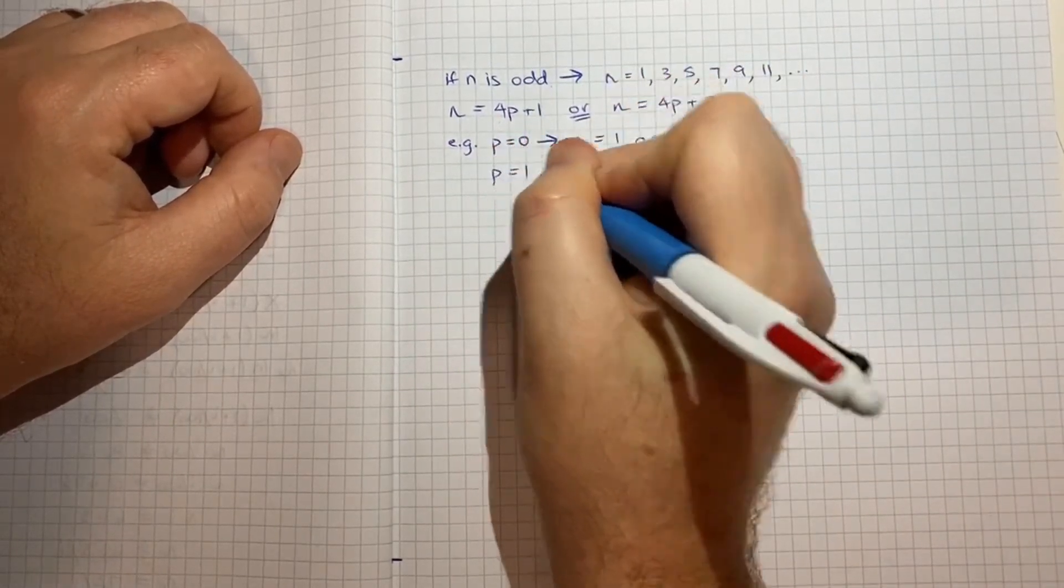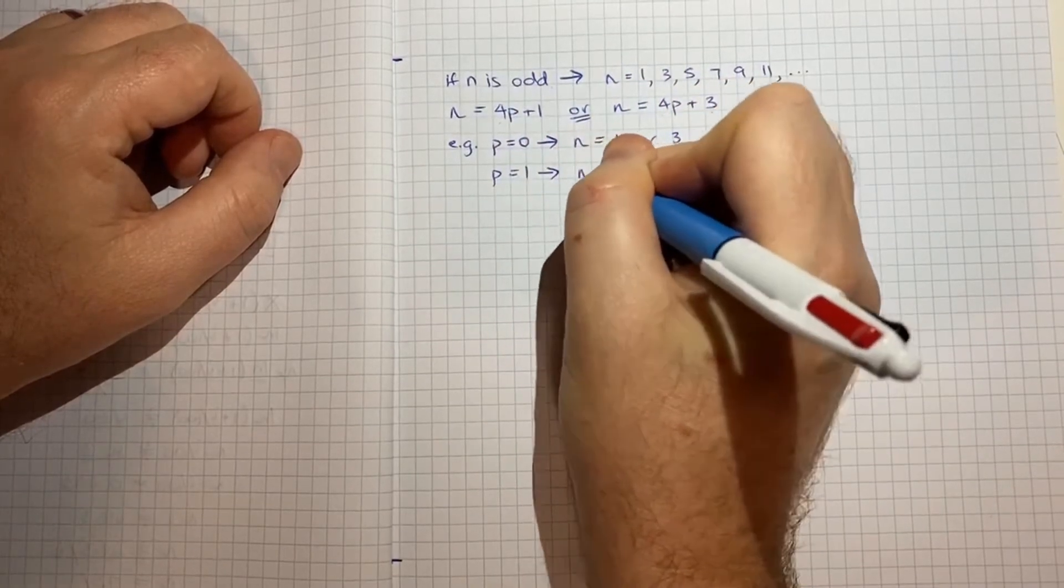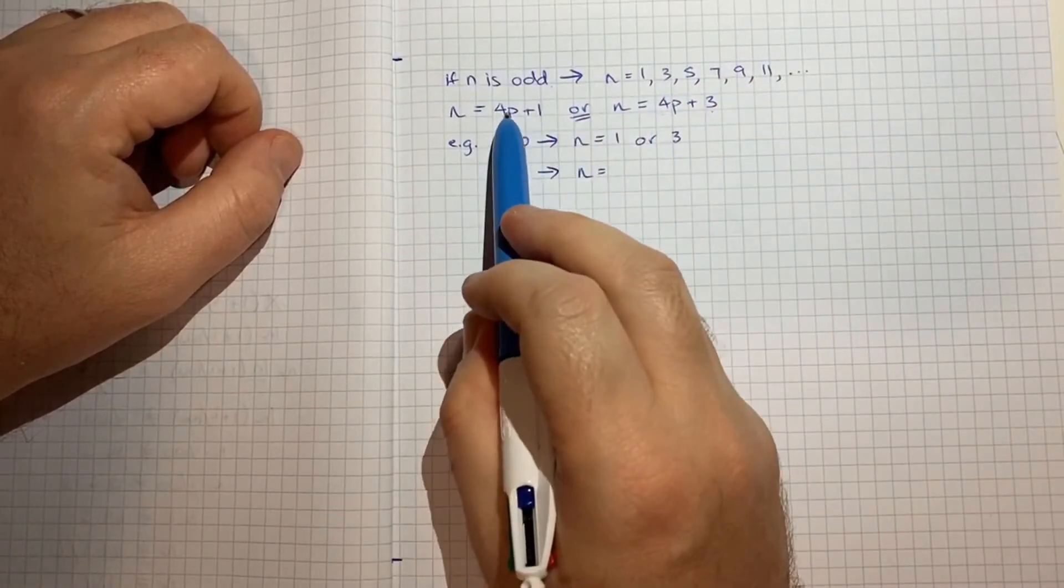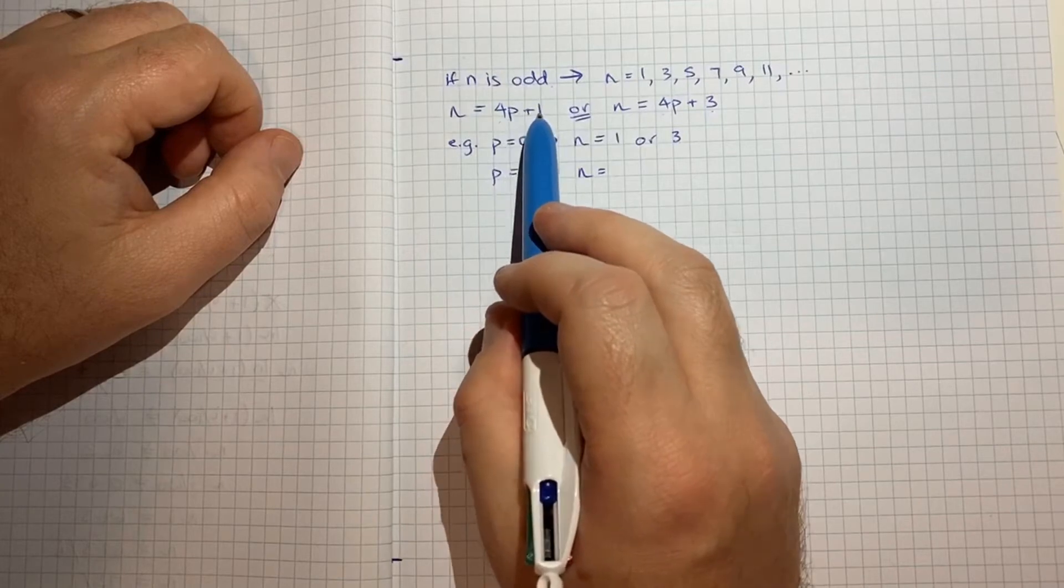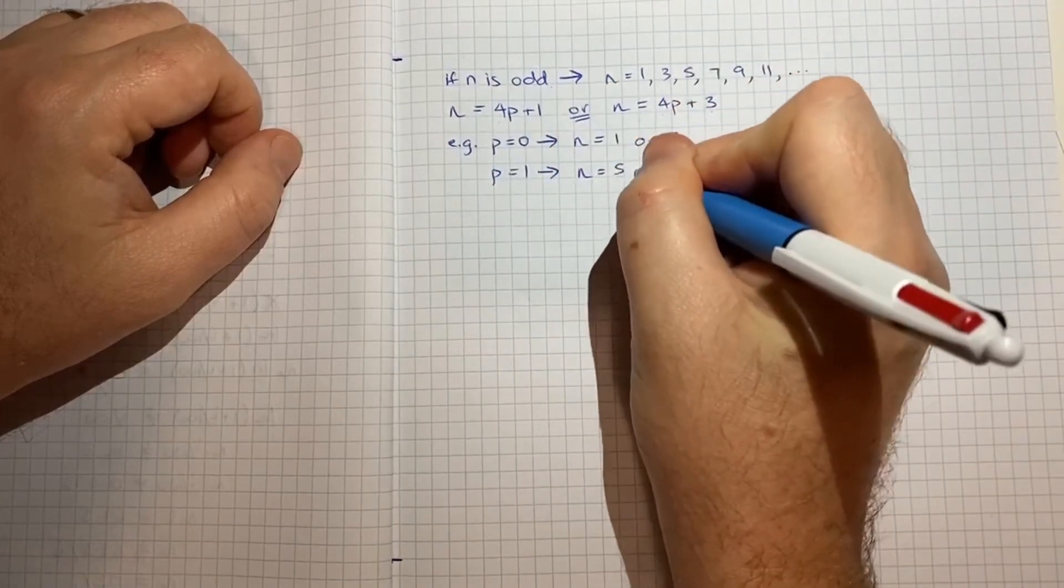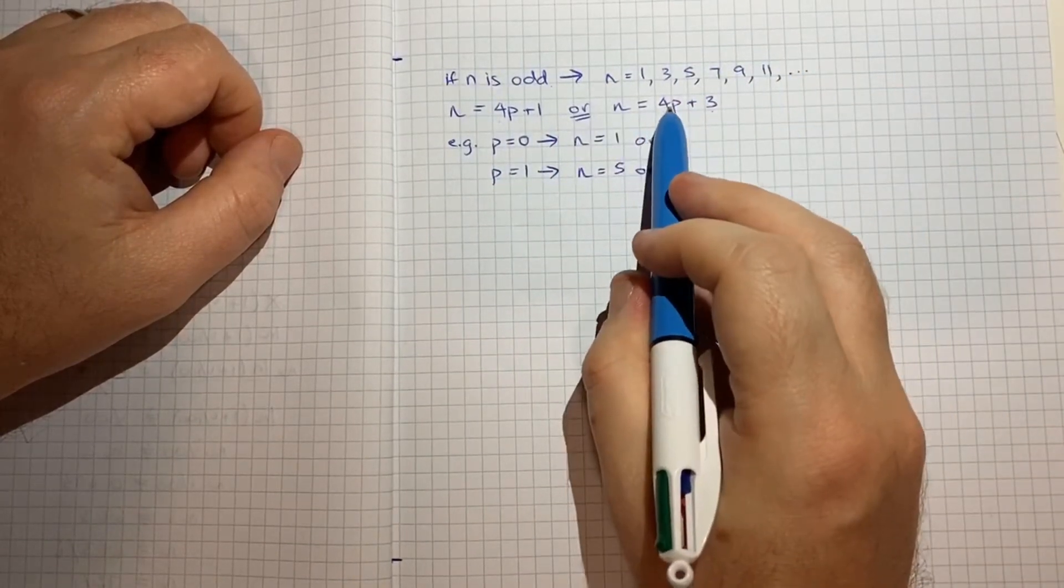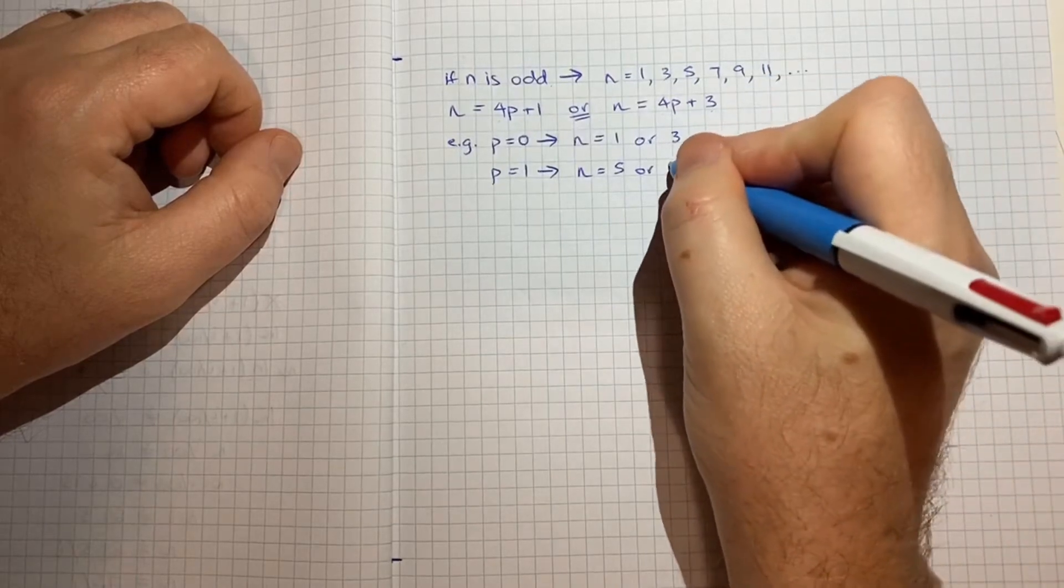If p was equal to 1 then we'd get n equals 4 times 1 plus 1 is equal to 5 or 4 times 1 plus 3 is equal to 7.